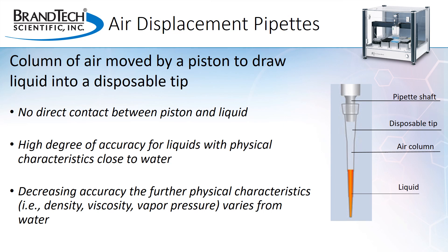Because these types of pipettes use a column of air to move the liquid, they are best for handling liquids that have physical characteristics similar to water and are very accurate when used with proper technique and a properly fitting tip. However, the further the physical characteristics of a liquid differ from water, such as its density, viscosity, or vapor pressure, the less accurate the pipetted volume will be.